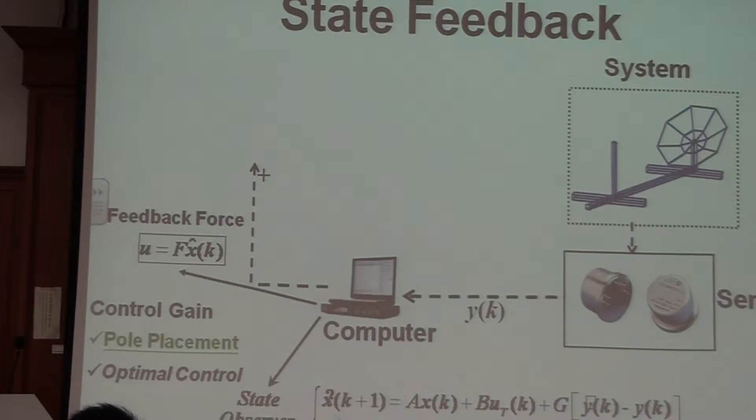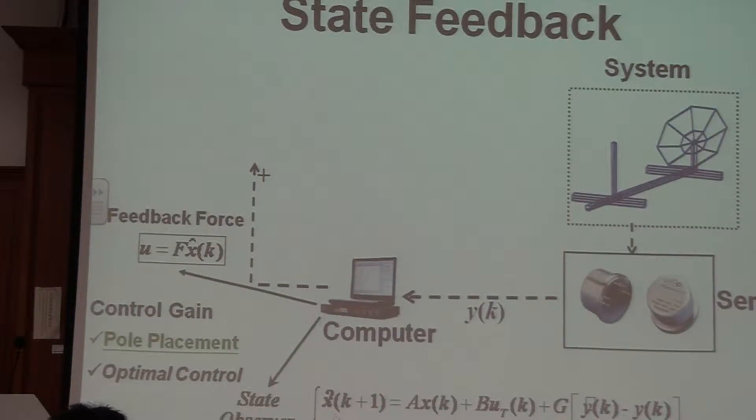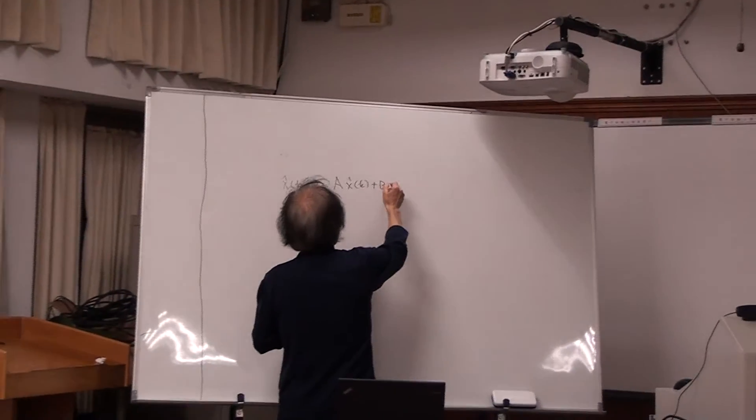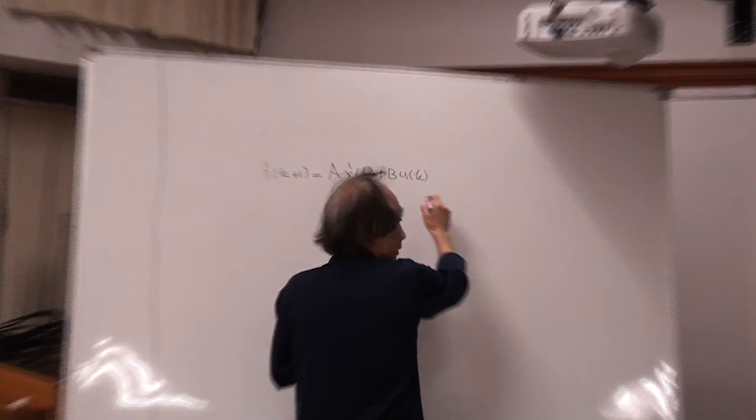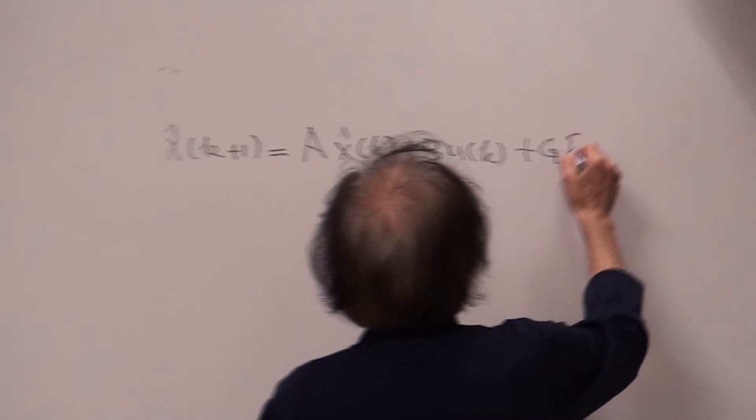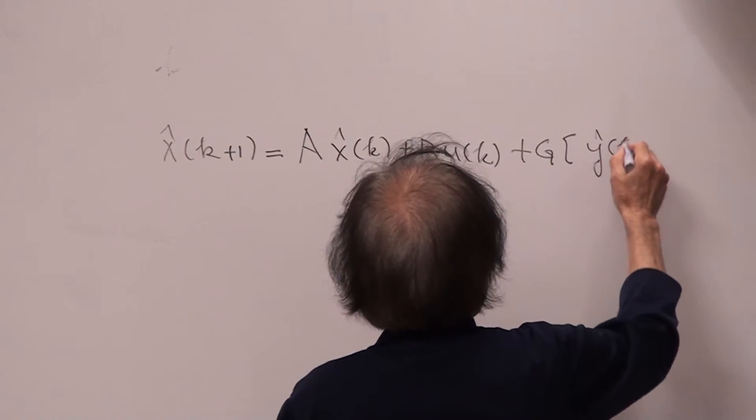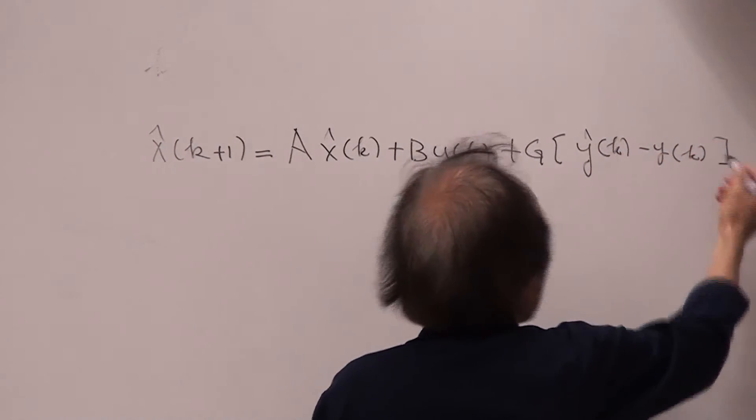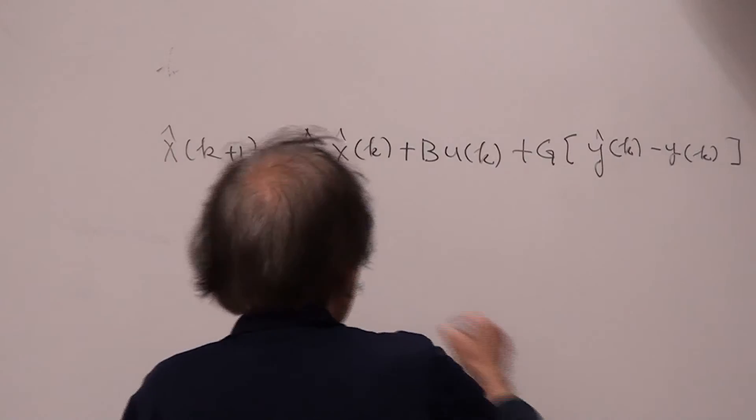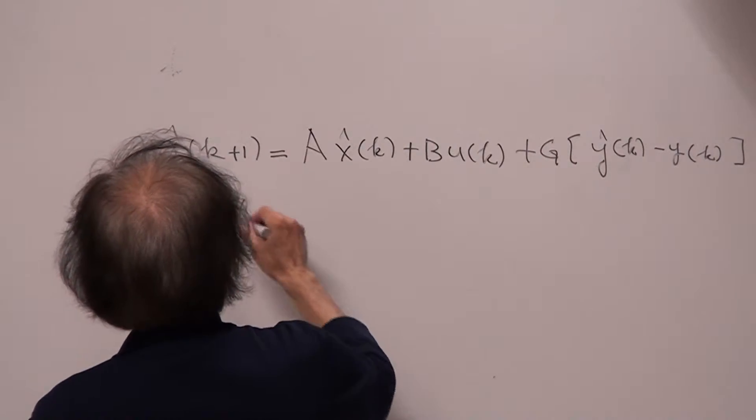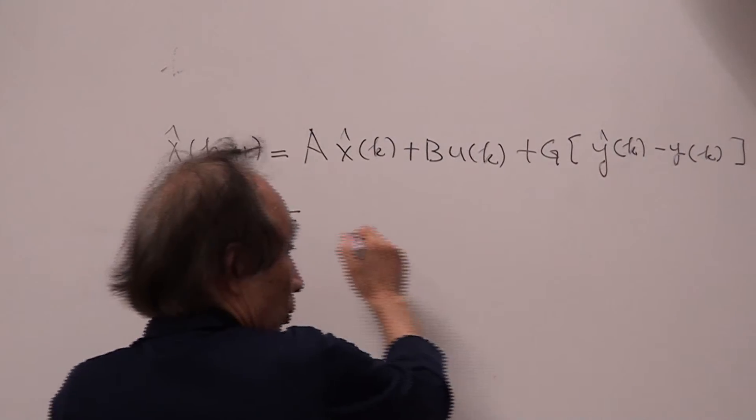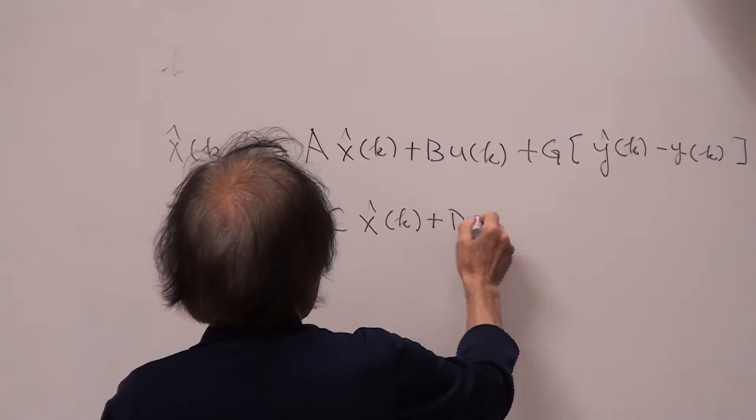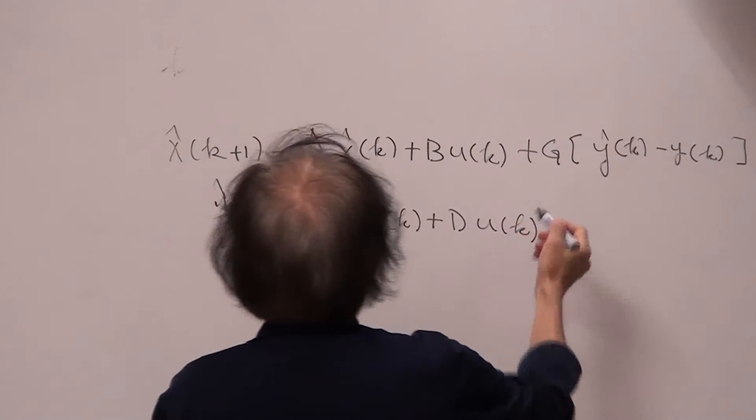Because the slide is not correct. X hat equals A x hat k plus B u k and then plus G times y k minus y hat k. All right, and then y hat k equal to C x hat k plus D u k. All right.